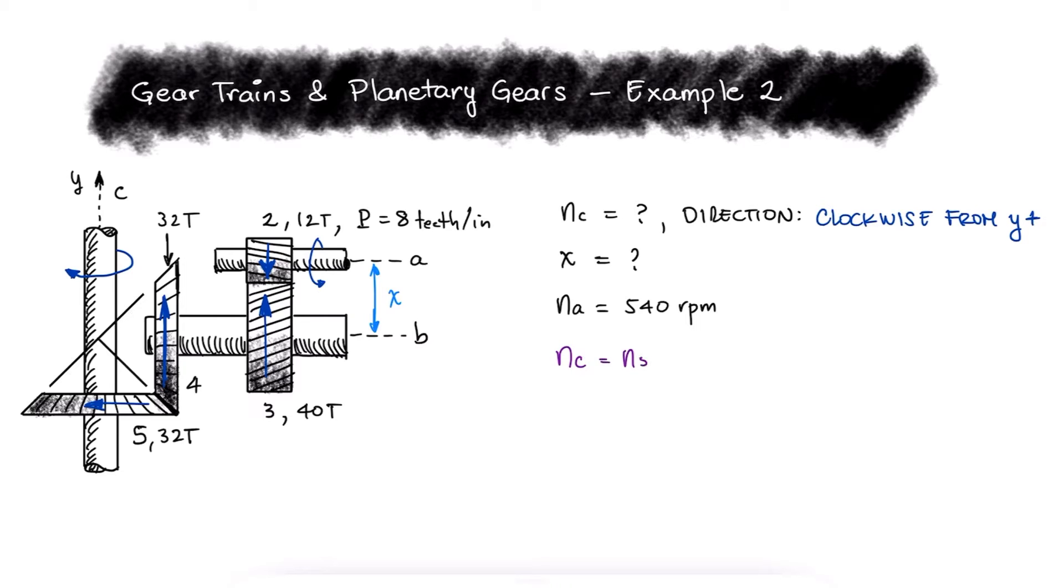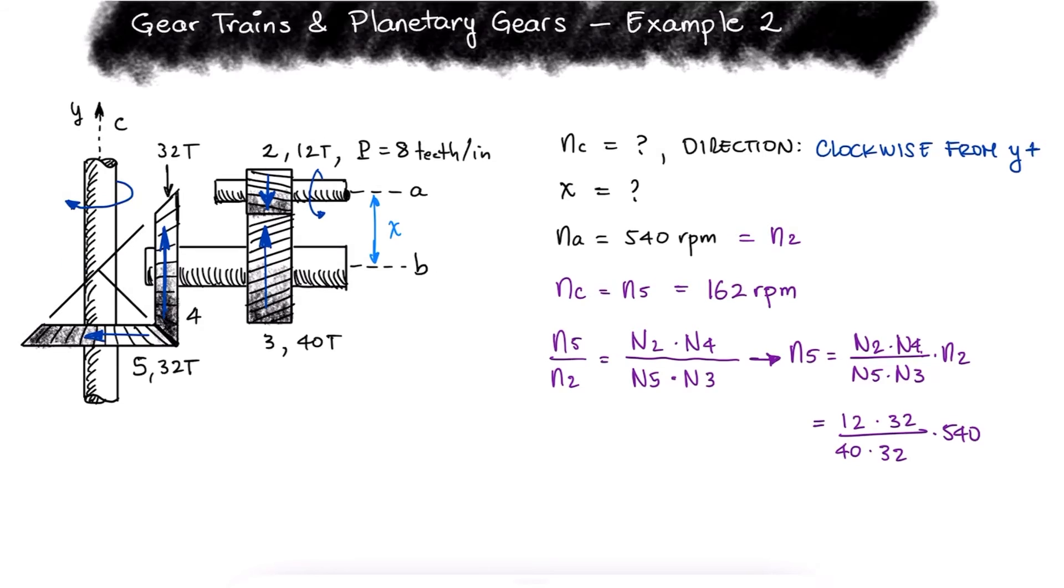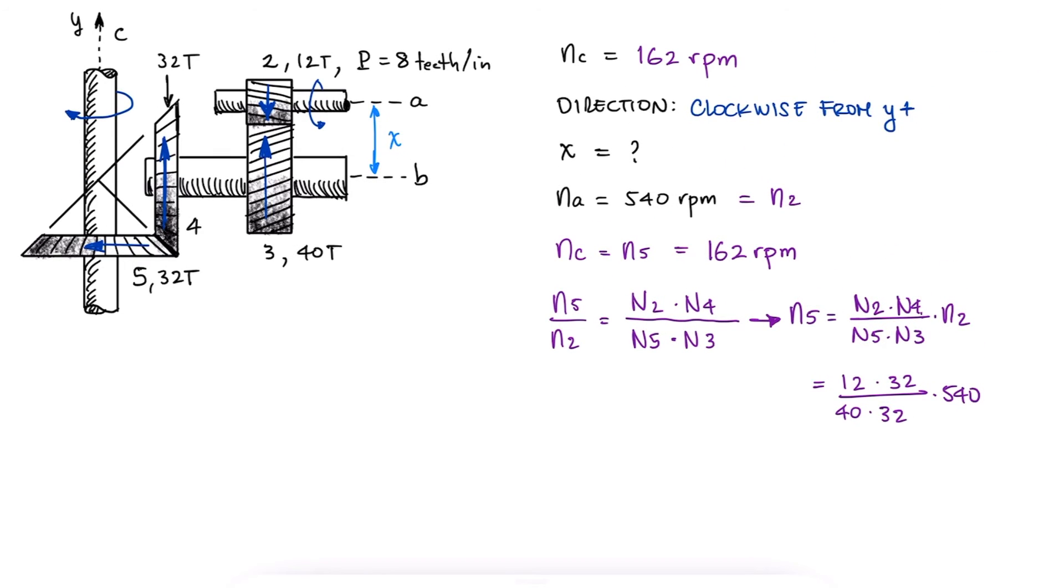The speed of shaft C is the same as the speed of gear 5. The speed of shaft A is the same as the speed of gear 2. With the rotation speed to number of teeth relationship, we see that gear 2 is a driving gear as is gear 4. We also see that gear 5 is being driven just as gear 3 is. Gear 5 is therefore rotating at 162 revolutions per minute.